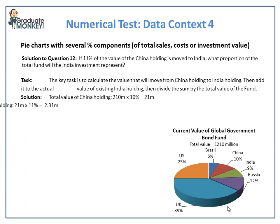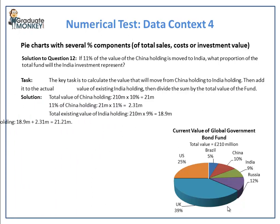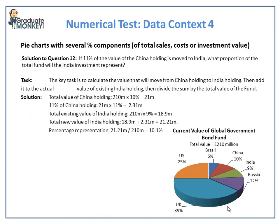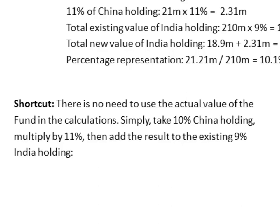As you can see, there are quite a few calculations involved here. The good news is that we can avoid most of them. Here is a shortcut: there is no need to use the actual values at all in the calculations. Simply take 10%, which is the proportion of China holding, multiply it by 11%, which is the percentage that moves to India, then add the result to 9%, which is the existing India holding. The final percentage figure will be the new India holding.